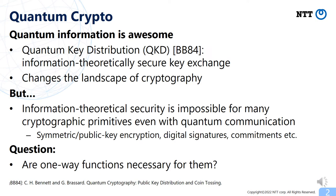If information-theoretic security is impossible, then the next natural question is: what is the minimal assumption for these cryptographic primitives with quantum communication? In the classical world, it is known that the existence of one-way functions is the minimal assumption for essentially any non-trivial cryptographic functionality. So we would like to ask if this is the same in quantum cryptography — are one-way functions necessary for these primitives with quantum communication?